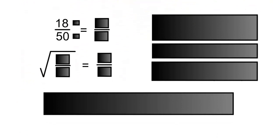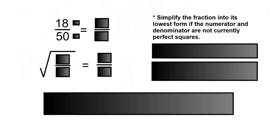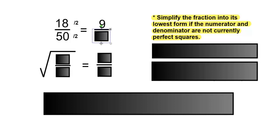We'll start with 18 over 50. Simplify the fraction into its lowest form if the numerator and denominator are not currently perfect squares. 18 is not a perfect square, and therefore we'll reduce. 18 and 50 are both divisible by 2. 18 divided by 2 is 9, and 50 divided by 2 is 25.